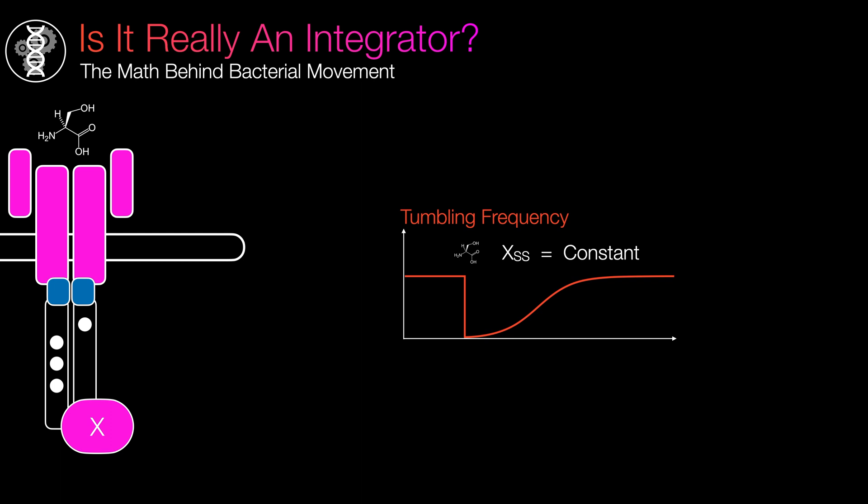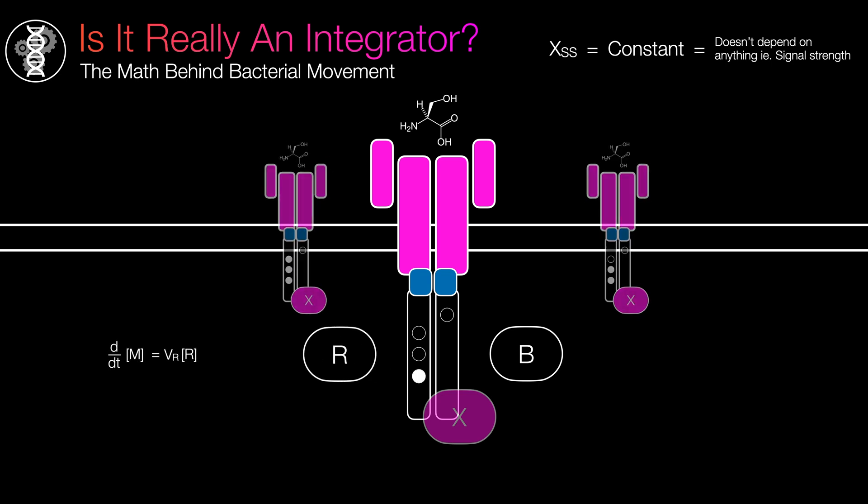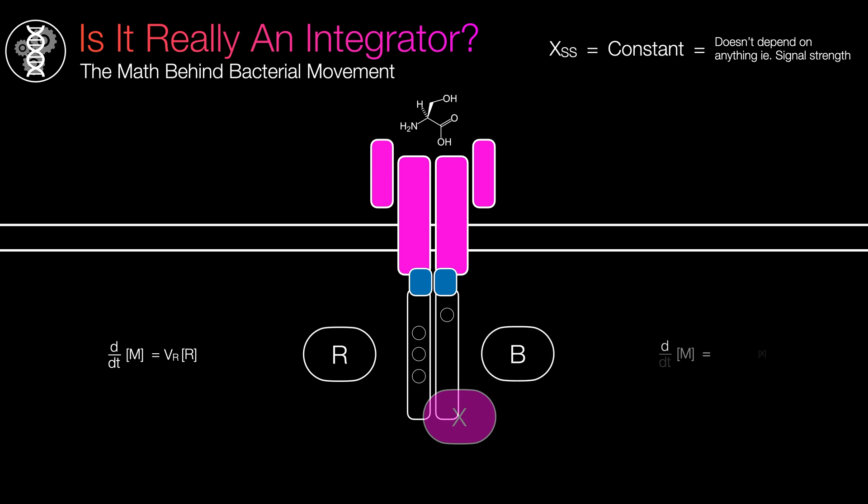The methylation caused by R is independent of the number of receptors. This is because R is scarce and operates at such a low pace, so methylation slots seem like a bottomless well to it. Demethylation caused by B only occurs when X is in the on state. The on state of X exposes the receptor's methylation to B.